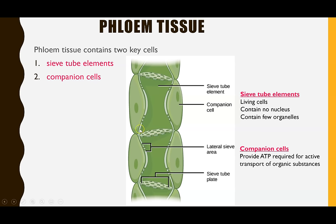Translocation in plants does require active transport. The sieve tube elements have very few organelles, but the companion cells do, and the companion cells are responsible for providing the ATP required for the active transport of sucrose and other organic substances into the sieve tube element, after which it can be transported en mass.